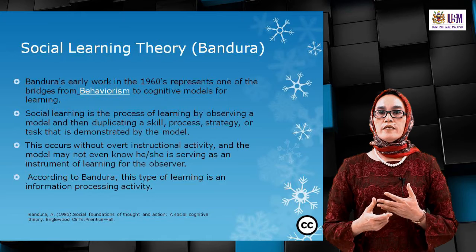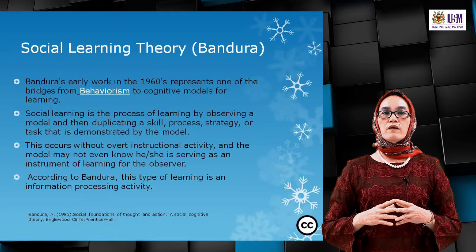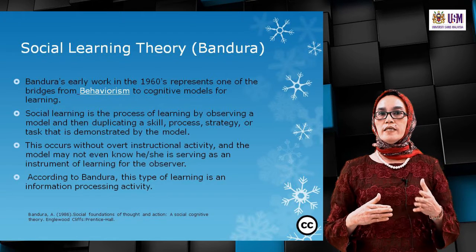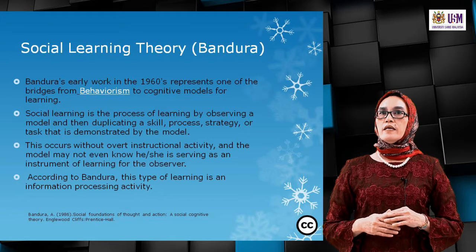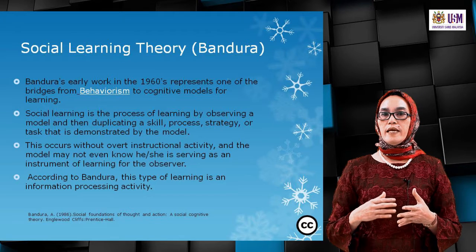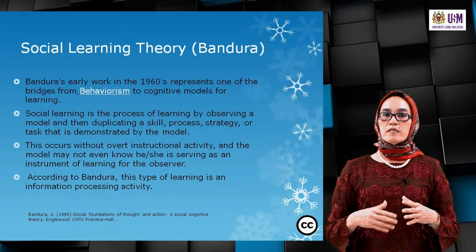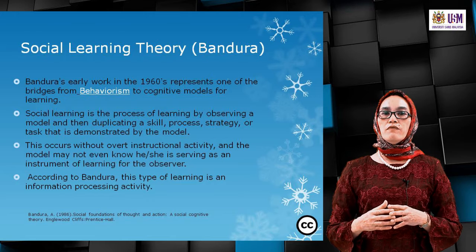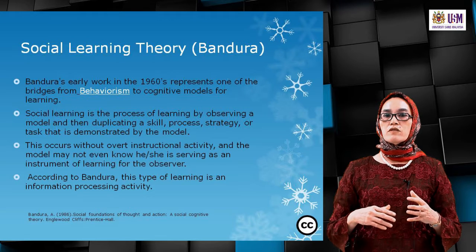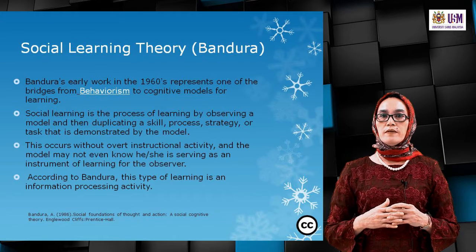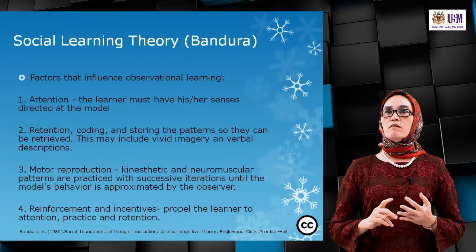Social learning theory by Bandura — his early works in the 1960s represent one of the bridges between behaviourism and the cognitive model of learning. Social learning is the process of learning by observing a model and then duplicating the skills, process, strategy, or task demonstrated. This occurs without overt instructional activity, and the model may not even know they are serving as an instrument of learning. Bandura called this an information processing activity. The factors influencing observational learning are attention, retention, motor reproduction, and reinforcement and incentive.